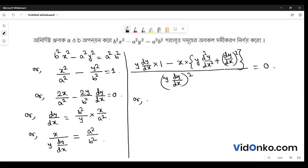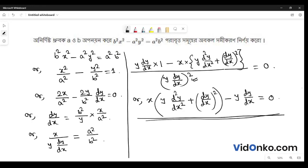x into y d2y dx2 plus dy dx whole square minus y dy dx is equal to... when we multiply by 0, we get 0.